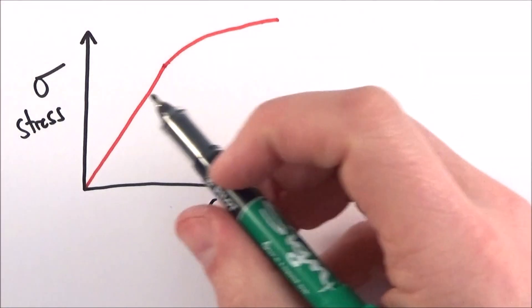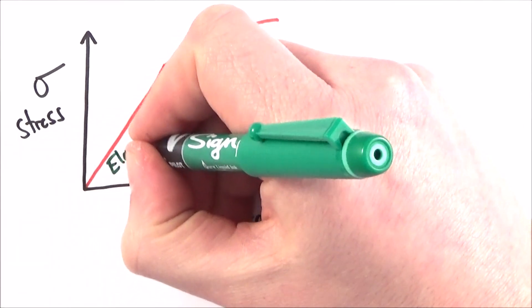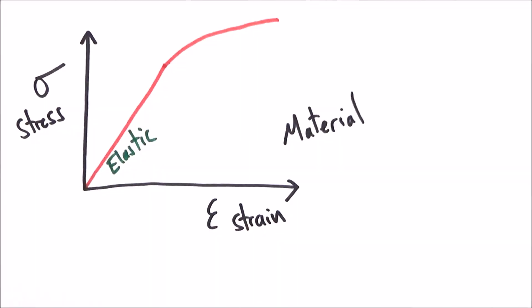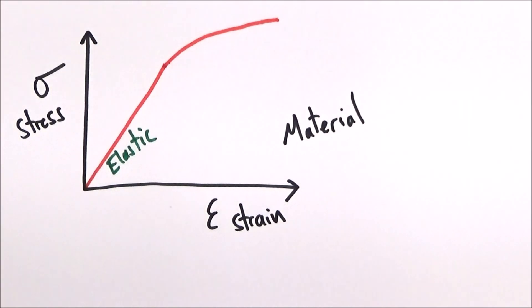So on this graph, what we have are a couple of key features. First of all, we have the region where something behaves elastically. Now things which are elastic, you stretch them and then they go back to the original shape when the force isn't applied anymore.